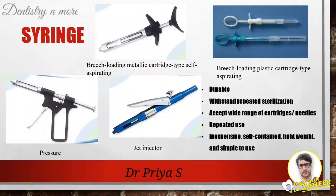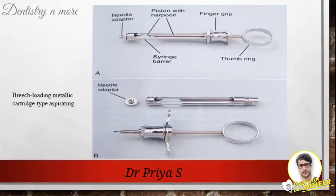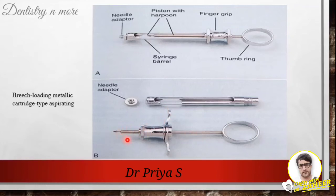Now let's look at the different components of the breech-loading metallic cartridge type syringe. Here is the assembled syringe and here is the disassembled one. As you can see in the figures, there is a metallic syringe barrel, a piston with a pointed harpoon at its end, a finger grip, a thumb ring, and a needle adapter.